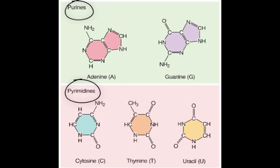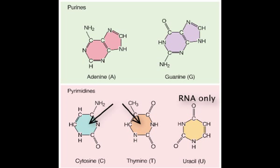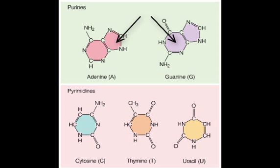Each nitrogenous base is either a pyrimidine or a purine. The pyrimidines, which are thymine and cytosine, have a single carbon ring. The purines, which are adenine and guanine, have a double carbon ring. Because of hydrogen bonding, these nitrogenous bases have an affinity for one another.